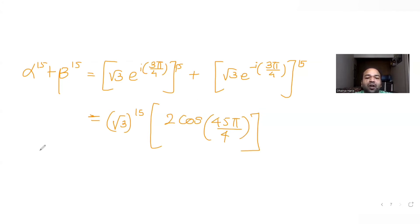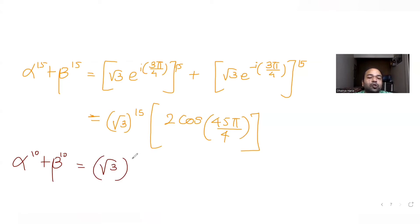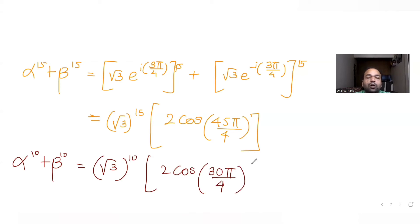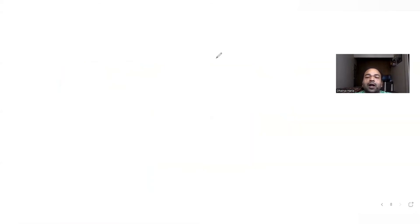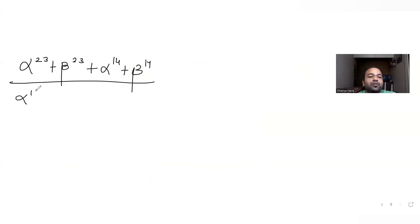For α^10 + β^10: we get √3^10 · (e^(i·30π/4) + e^(−i·30π/4)) = √3^10 · 2·cos(30π/4). Now putting all four simplified expressions into the full expression: (α^23 + β^23 + α^14 + β^14) / (α^15 + β^15 + α^10 + β^10).